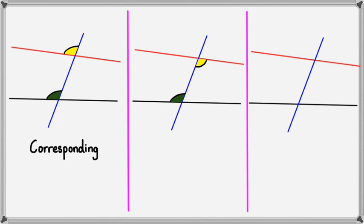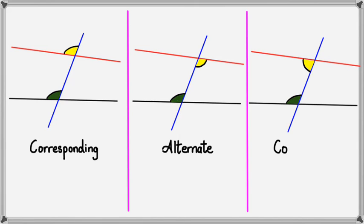This pair of angles is known as alternate angles. Then you still have the green angle, but this time you're looking at the inside — this one is known as co-interior angles.